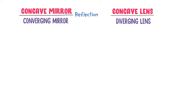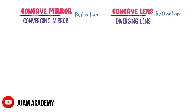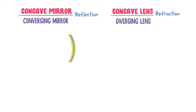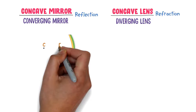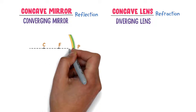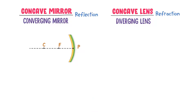Reflection phenomena occurs in concave mirrors and refraction phenomena occurs in concave lens. Now consider a concave mirror. This is the center of curvature, focal point, pole, and principal axis of this concave mirror.